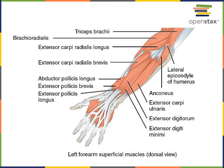We'll start with a posterior view, getting oriented to the muscles that extend the manual region. Extensor carpi radialis longus is found immediately on the medial side of brachioradialis. They share an origin at the lateral supracondylar ridge of the humerus. The action of extensor carpi radialis longus is in the name — it performs extension of the radiocarpal joint. Similarly, extensor carpi radialis brevis performs the action of extension at the radiocarpal joint. So these muscles extend the wrist, extend the radiocarpal joint.